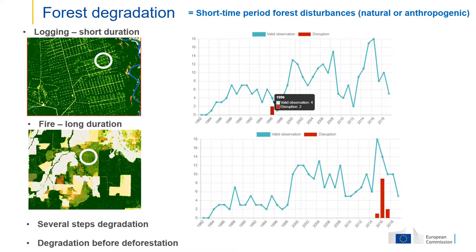Those two examples are single-step degradation, but we can also have several-steps degradation — for example, logging followed by forest recovery and then by fire. Those several steps can also be analyzed within our data. We can also identify degradation that will then lead to deforestation — a degraded forest that will then be deforested later on. This is very important because 45% of the detected degradation will then be deforested, which highlights the importance of tracking degradation as a precursor of deforestation.